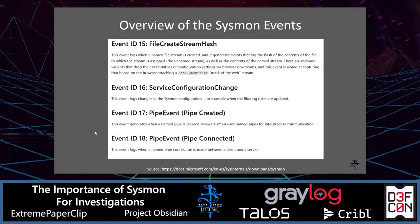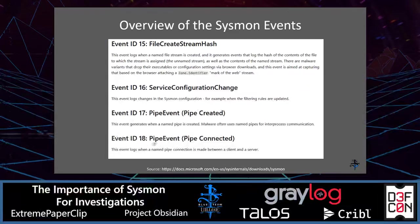Event ID 15 is file create stream hash — I'll be honest, this one hasn't really stood out to me. Event ID 16 is service configuration change. Event IDs 17 and 18 are the pipe events — pipe created and pipe connected respectively. These can be very useful in malware hunting.